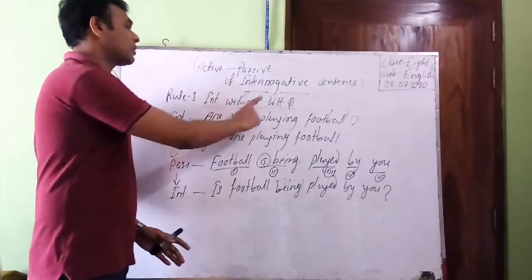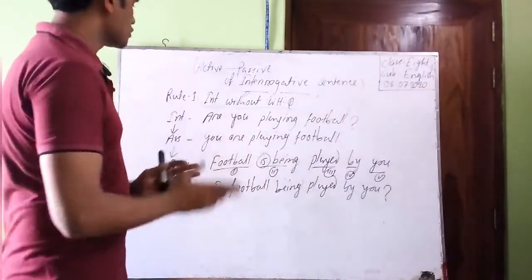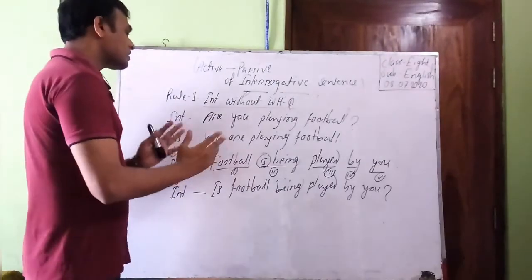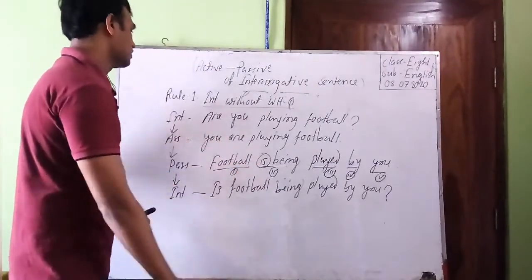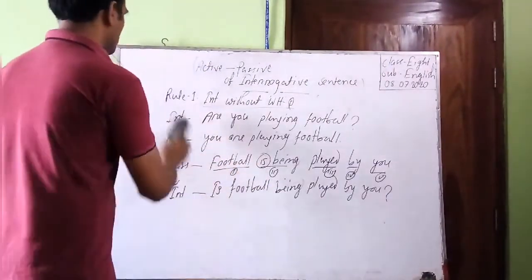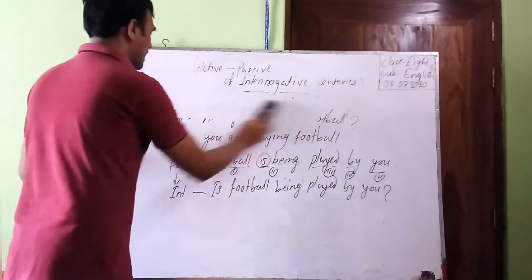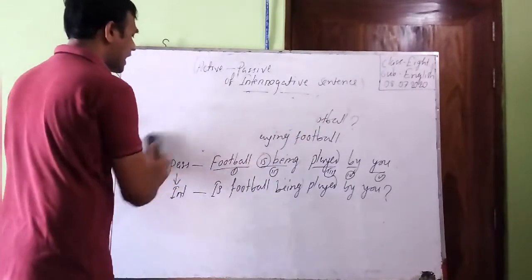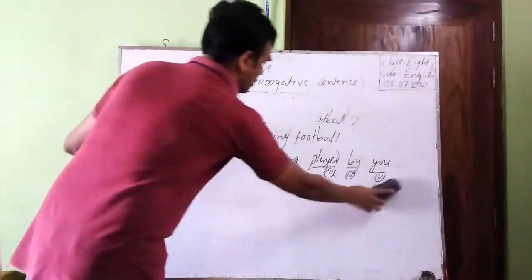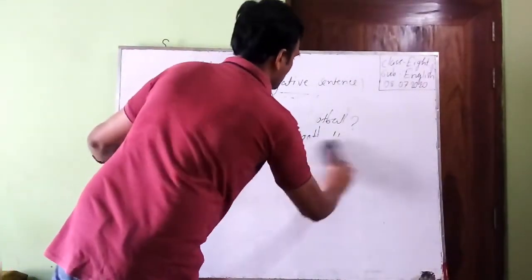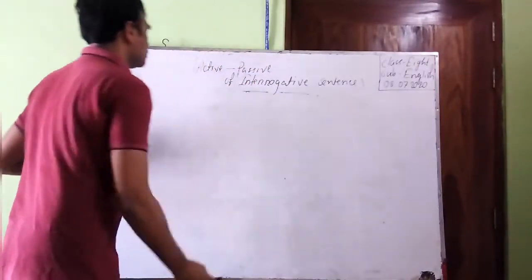Now we will look at interrogative sentences with WH-questions. Here we will have three rules. The first one will be about the WH-word 'Who.'